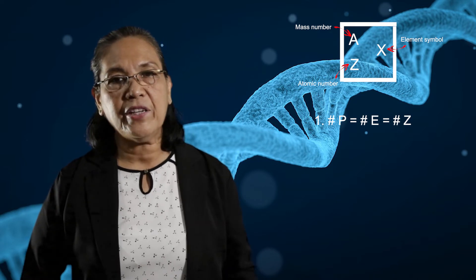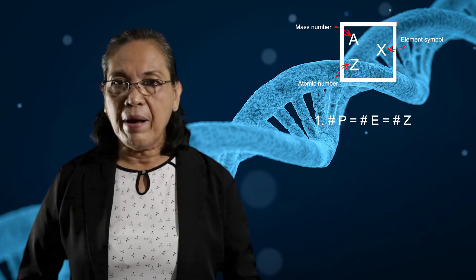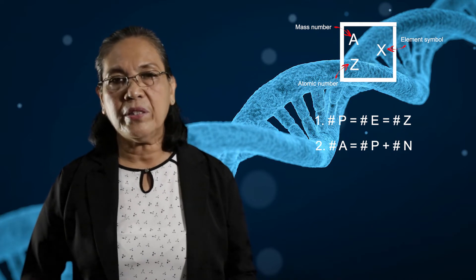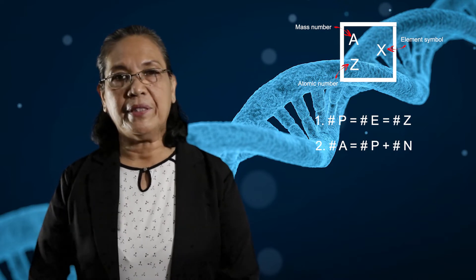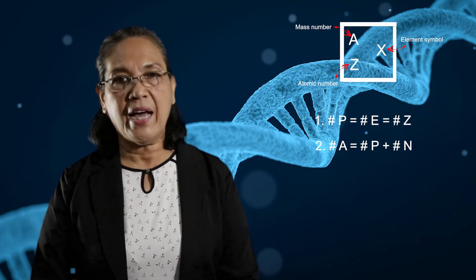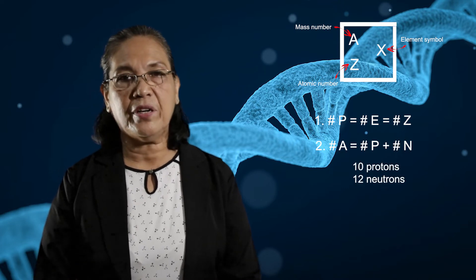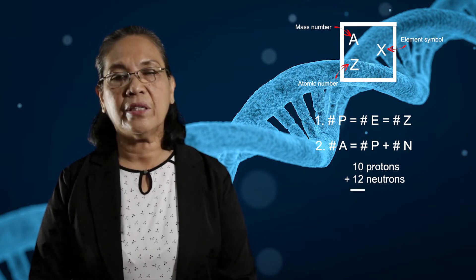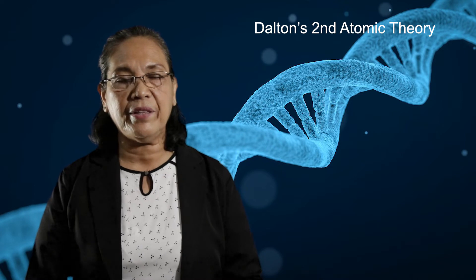Another important relationship is that the atomic mass, or mass number, is equal to the sum of the number of protons plus the number of neutrons. For example, if an element has 10 protons and 12 neutrons, so its atomic mass or mass number is 10 plus 12 equals 22.